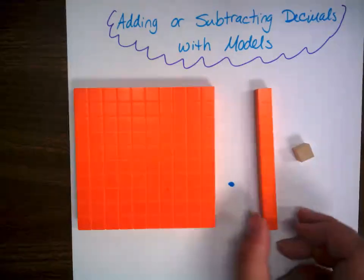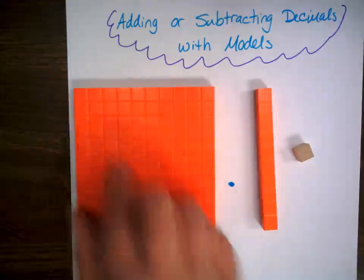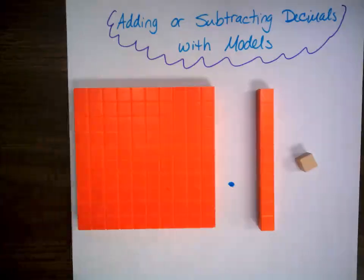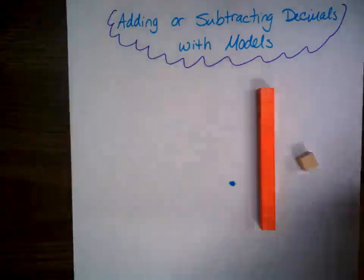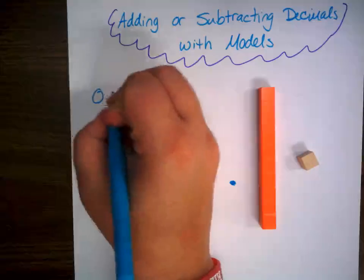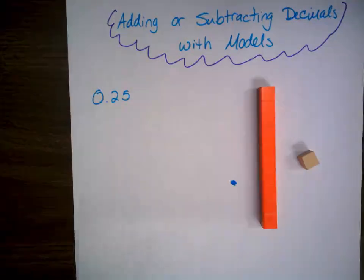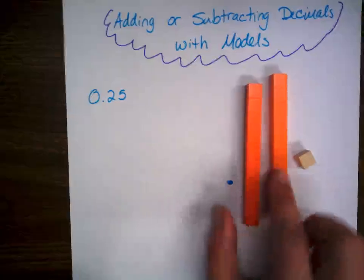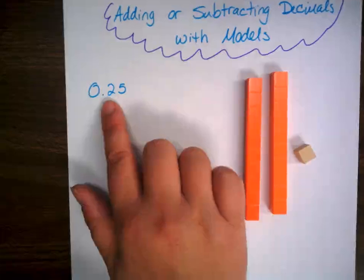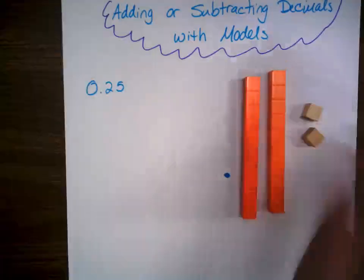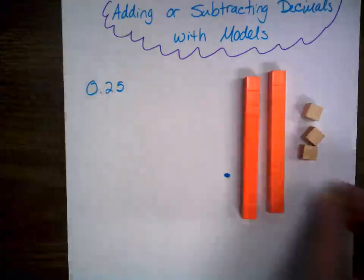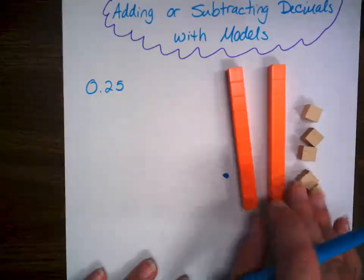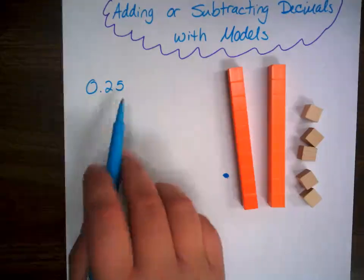Now when we're adding or subtracting decimals with our models, we're going to think of this as one, this as a tenth, this as a hundredth. So let's take the number 0.25 — 25 hundredths. That means I would have two tenths here, which is representative of the two tenths in the number, and then one, two, three, four, five hundredths. So I now have two tenths and five hundredths represented here — the same as this number.